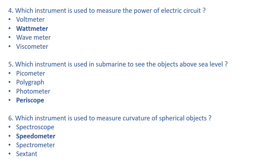Voltmeter is used to measure the electric potential difference between two points. Wave meter is used to measure the wavelength of a radio wave. Viscometer is used to measure the viscosity of a liquid — viscosity can be defined as the resistance between the movement of two layers. Let's come to the next question.